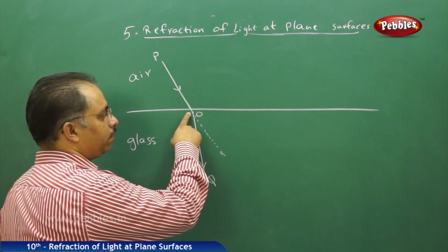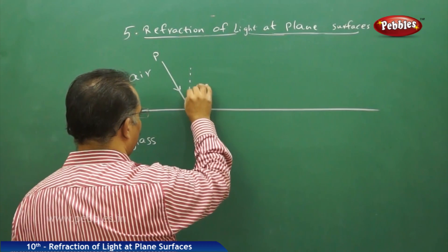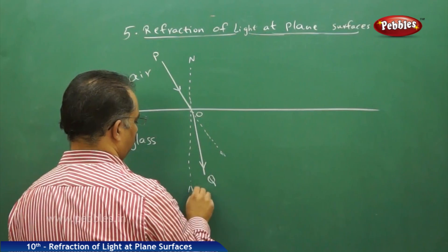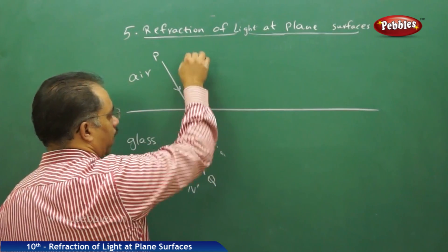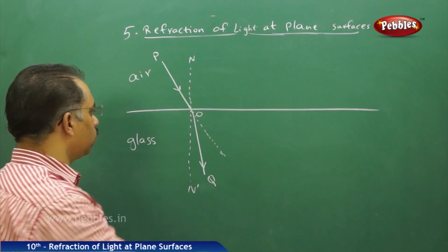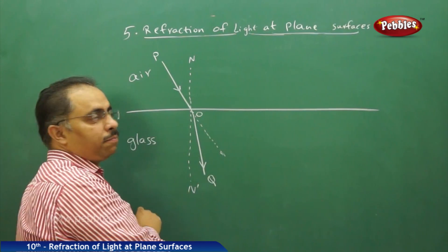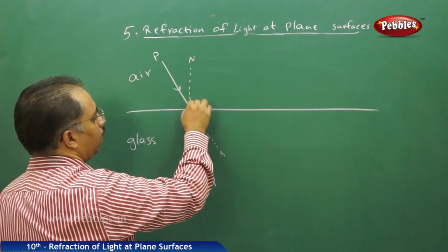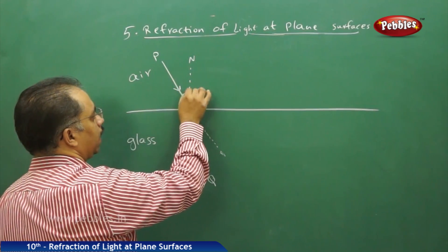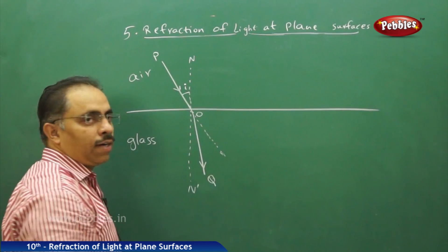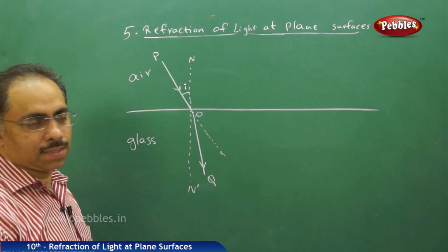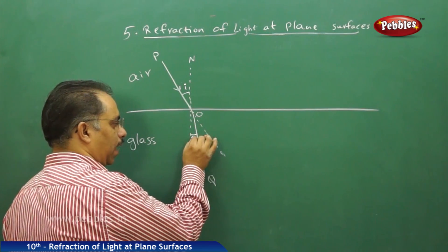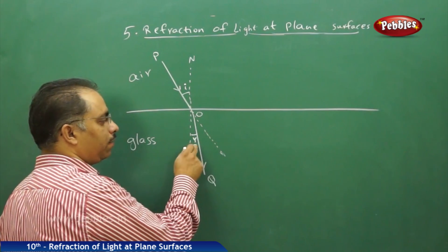O is the point of incidence. If I draw a normal, NON' is the normal to the boundary between air and glass. The angle between PO and ON — this angle here — we will call it the angle of incidence. Whereas the angle between N'O and OQ here, this angle we will call the angle of refraction.